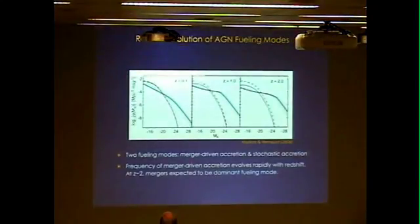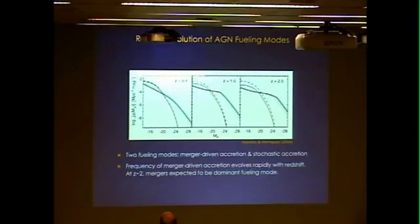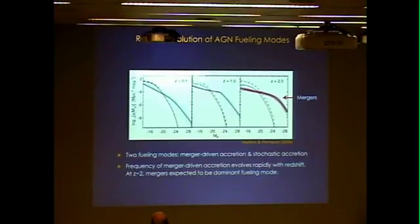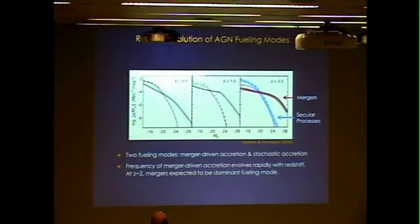Before CANDELS, the primary expectation was that by redshift 2, the main trigger of AGN activity — even moderate-luminosity AGN — would be major mergers. This is from predictions such as the luminosity function from Hopkins and Hernquist 2006, where they predict luminosity functions for AGN fueled by different processes: mergers versus secular processes. These two curves are quite similar at redshift 0.1, but by redshift 2, the number density of AGN triggered by mergers is substantially greater than those triggered by secular processes.